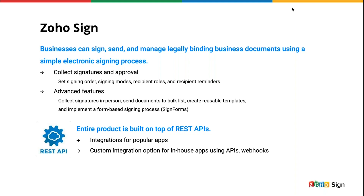Advanced features include collecting signatures in person using a device, sending documents to a large list in bulk, creating reusable templates, and a form-based signing process accessible publicly — called Sign Forms — for things like registration forms and policy documents. Notably, the product is entirely built on top of Zoho's own REST APIs, making it easy to integrate Zoho Sign with popular apps and third-party applications. Users also have the option to integrate it with in-house applications or websites, and web hooks allow building more custom integrations on top of the API.